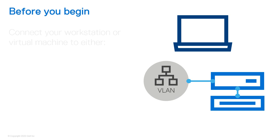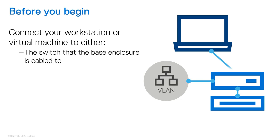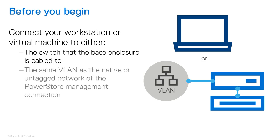Next, ensure that your workstation or virtual machine is connected directly to the same switch that the base enclosure is cabled to, or is on the same VLAN as the native or untagged network of the PowerStore management network connection.